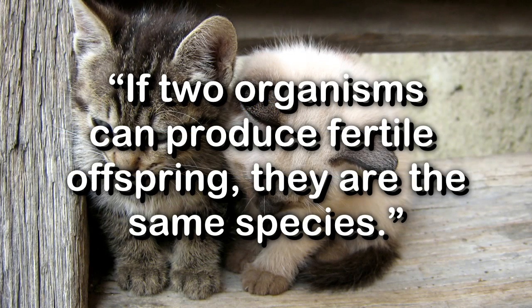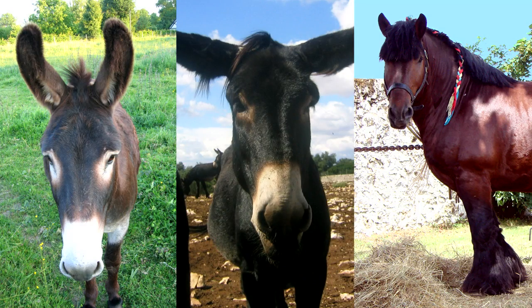The basic definition is, if two organisms can produce fertile offspring, they're the same species. So if two species cannot reproduce with each other, they're different species. If they can reproduce but the hybrid offspring is sterile, as with a donkey and a horse producing a mule, then they are still of different species.